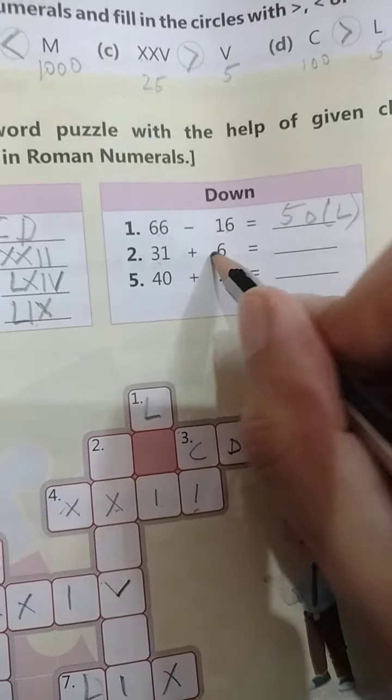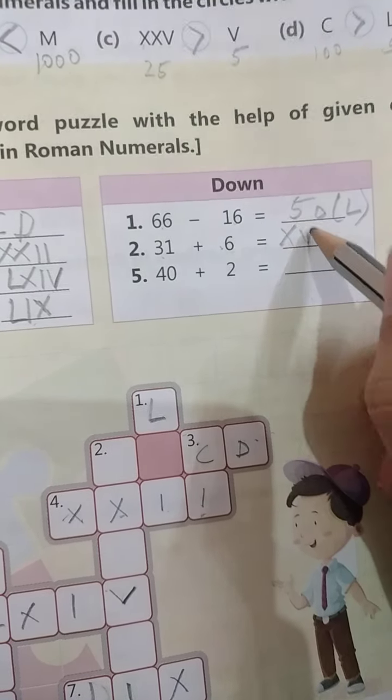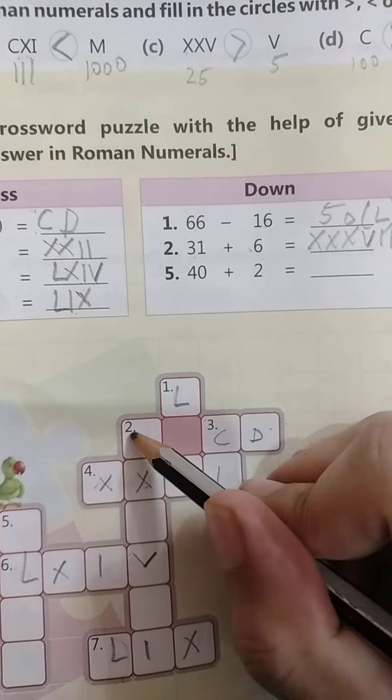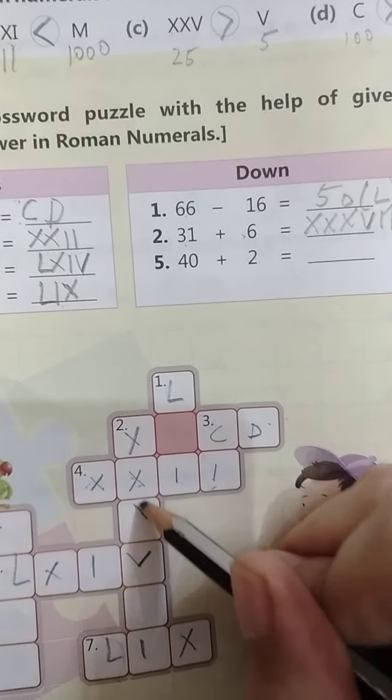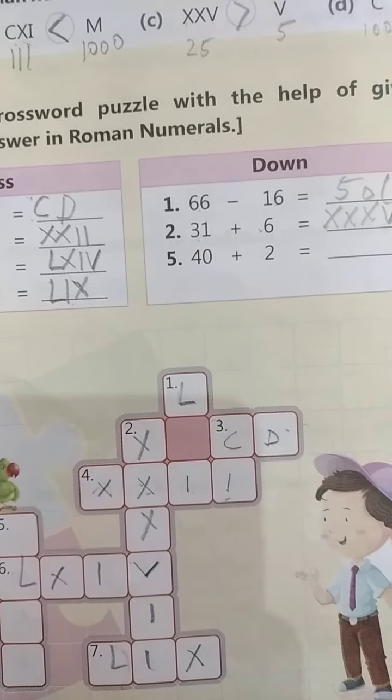Next, 31 plus 6, 37. How do we present? 10, 20, 30, 5, 6, 7. Then the second one, 10, 20, 30, 5, 6, 7. It was automatic.